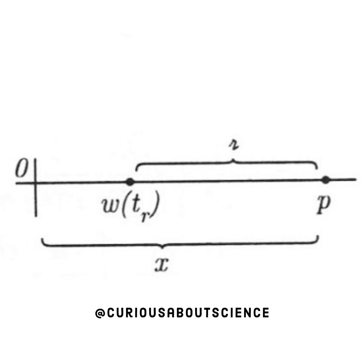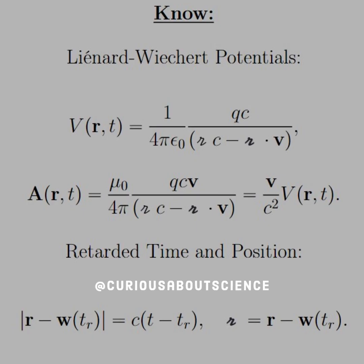Let's doodle what that looks like. We have the origin, we have W at the retarded time, the point is to the right of that, so we have a length x to the point, the script R is between the W and the point. So now we can set everything up when we need to. Again, what we need to know is the WL potentials, given as such, and the retarded time and position. We've seen that just a couple questions ago.